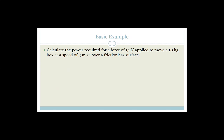Let's look at a basic example: calculate the power required for a force of 15 newtons applied to move a 10-kilogram box at a speed of 3 meters per second over a frictionless surface. Power equals force times velocity: 15 times 3 equals 45 watts. That's ridiculously easy — you're never going to get anything that easy in exams.